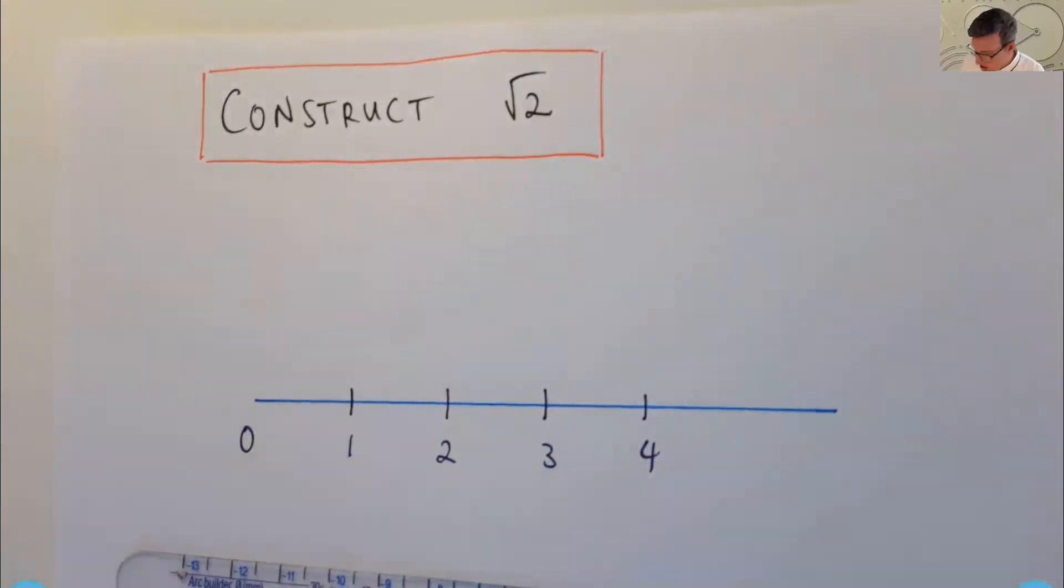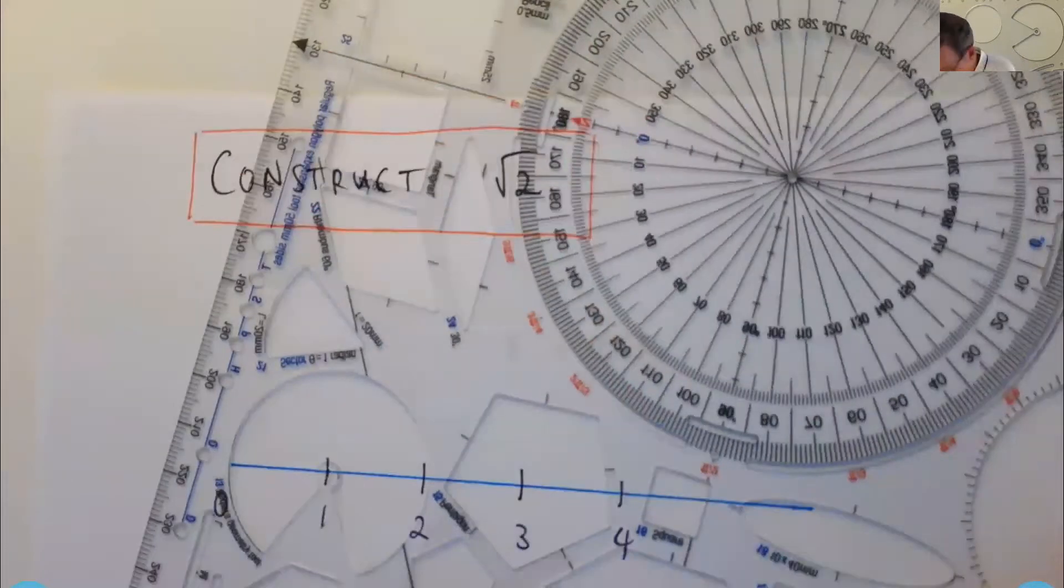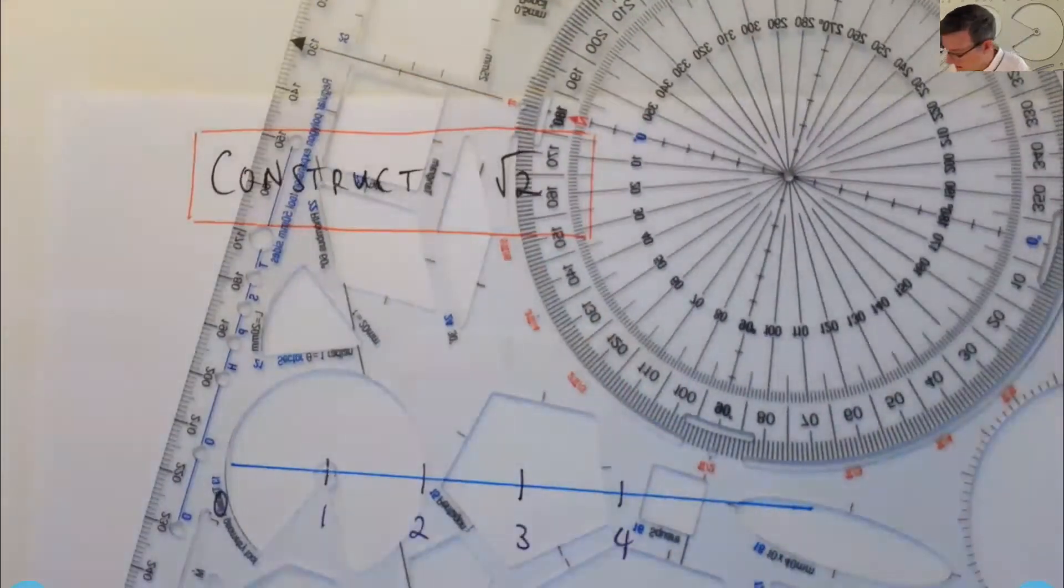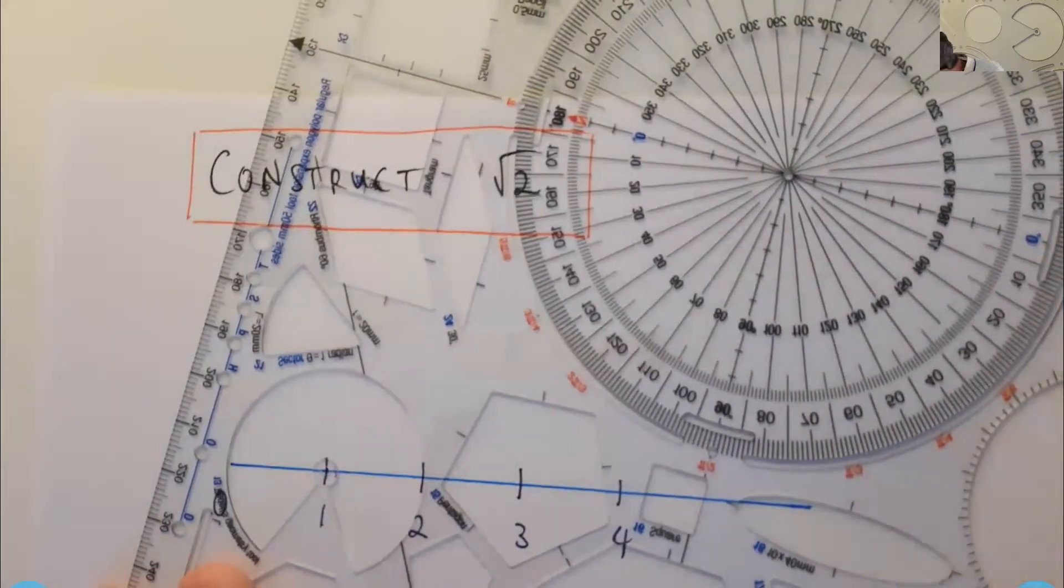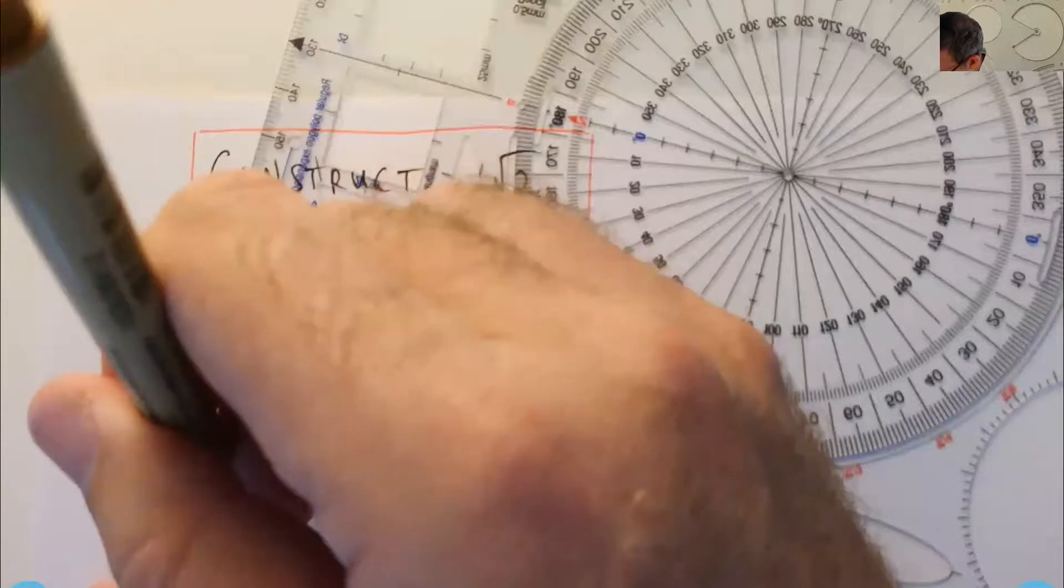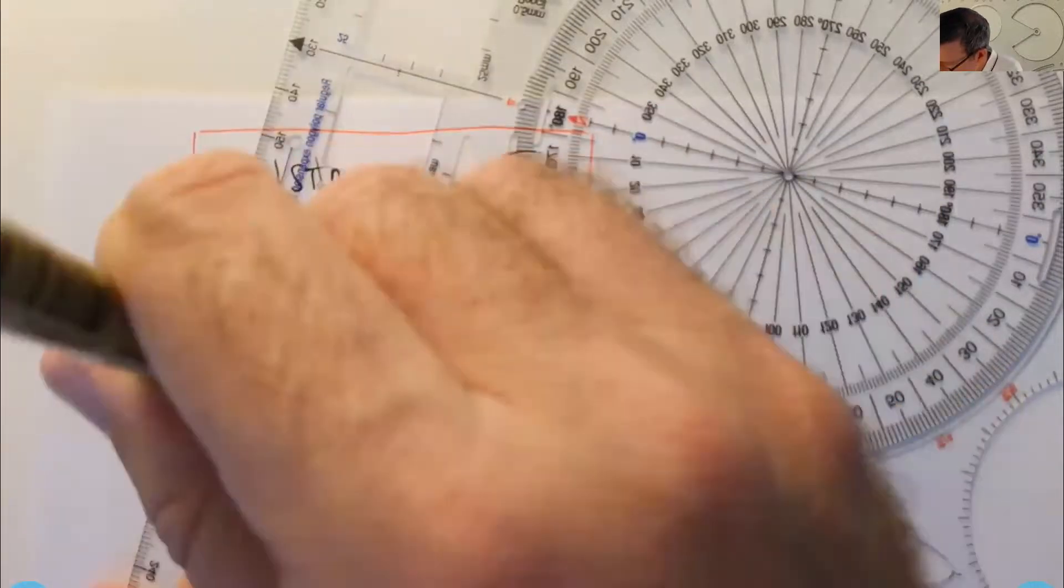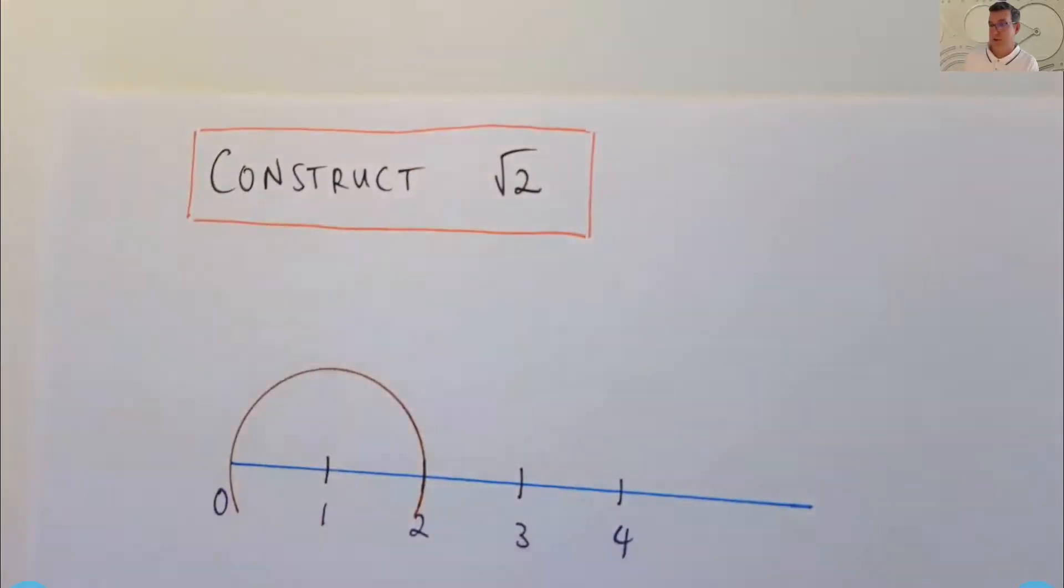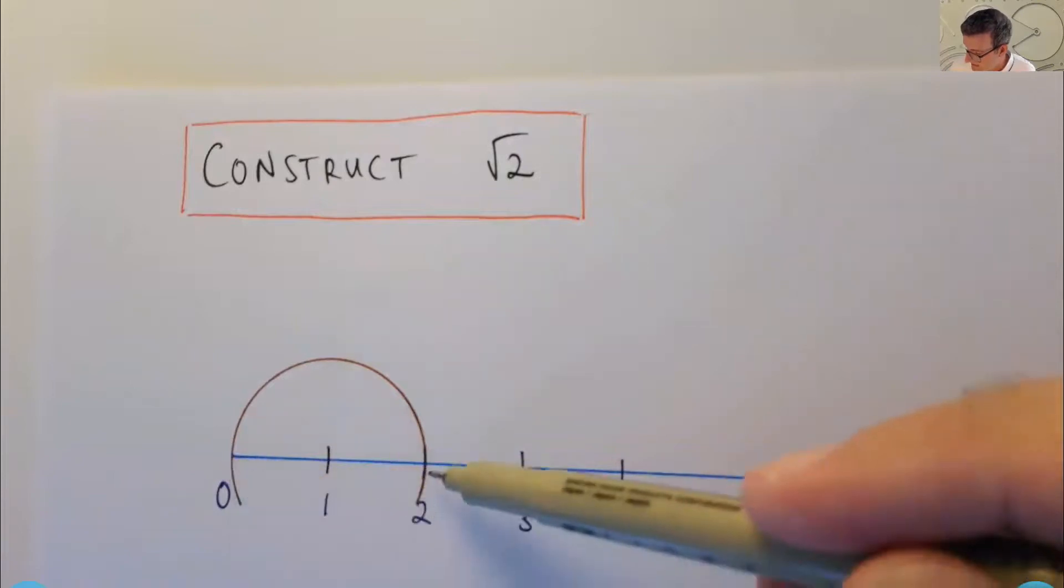So I've shown you all these moves in previous videos, but let me just show you how to do it again. So in order to drop a perpendicular to the point one, I'm going to draw a semicircle or just a slightly larger semicircle that cuts the axis at 0 and 2.